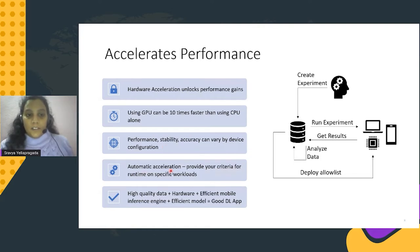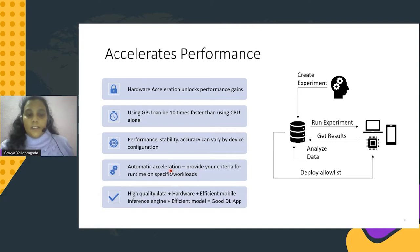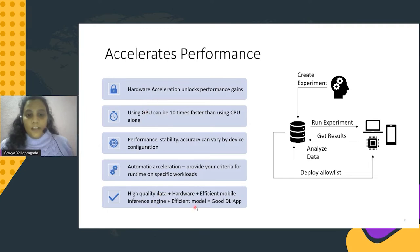Automatic acceleration also plays a key role, where users have the capability to control workloads and offload operations to particular accelerators while creating the experiment itself — avoiding fallbacks and directly offloading all workloads to selected accelerators. To develop a good deep learning application, prerequisites include: a high quality dataset, hardware for training, an efficient inference engine based on hardware specs, and an efficient model that performs well with high accuracy.